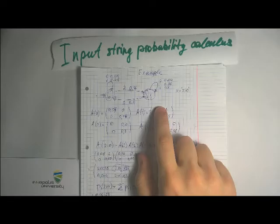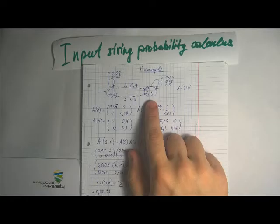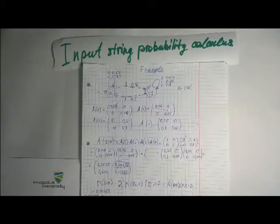Let's consider an example. We have the following automata. Assume we have input string X as 2, 1, 0. So S0 is an initial state and S1 is a final state.